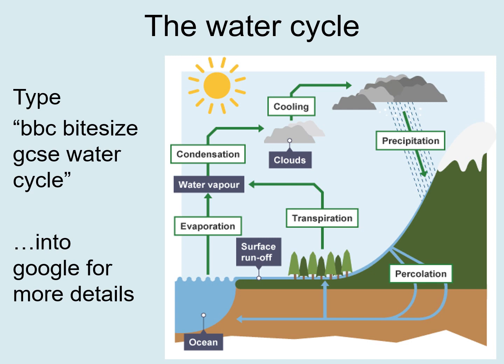The next cycle you need to know about for this lesson is the water cycle. You would have come across this at primary school and in key stage three. I'm going to talk through it really quickly, but if you want to, you can type 'BBC Bitesize GCSE water cycle' into Google and it brings up the right page showing this exact diagram, which also has written text for you to read through the stages.